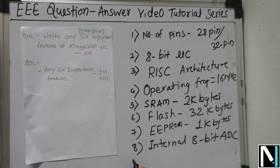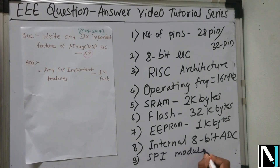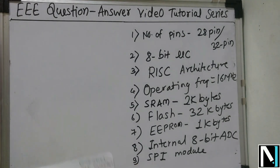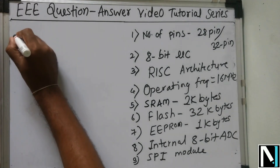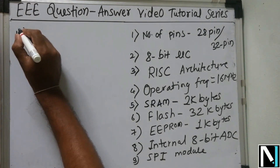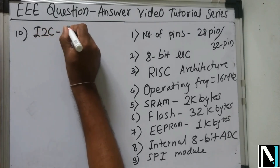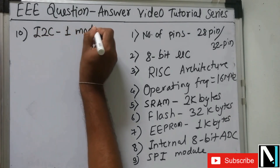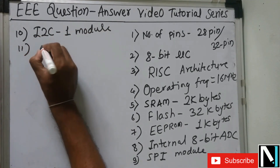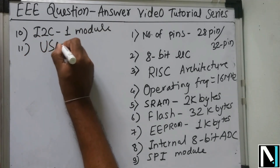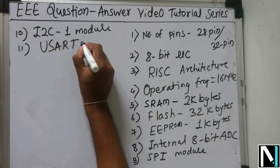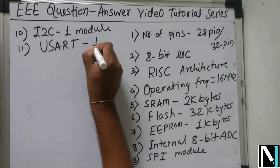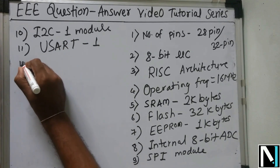It also has an SPI module — Serial Peripheral Interface. It has one I2C module and one USART module — Universal Synchronous Asynchronous Receiver Transmitter. The number of USART modules is one.